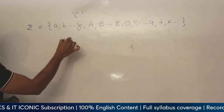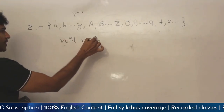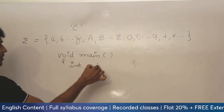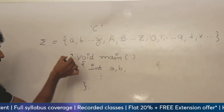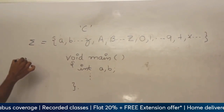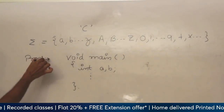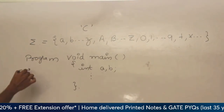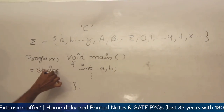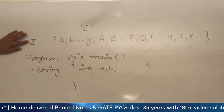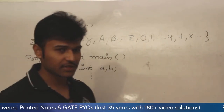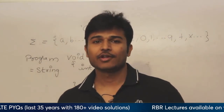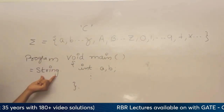If you write like this — void main, something, and then int A, B, so on and close it — this is nothing but a string. This is actually a program in C. In C, it is a program, but coming to TOC, it is nothing but a string. Sigma is nothing but the alphabet when you come to TOC — the set of all symbols which are allowed when you look at the C programming language. And now, a program is nothing but a string.